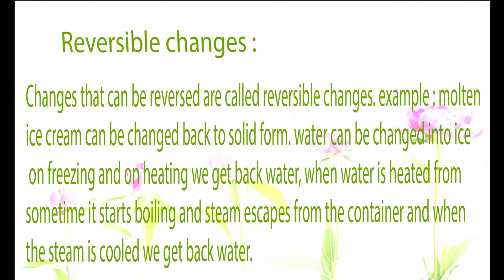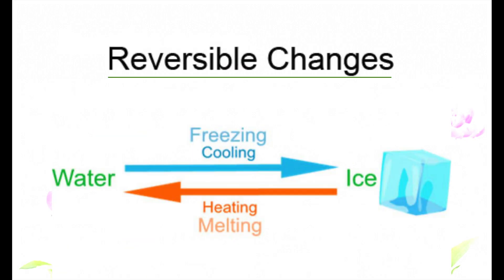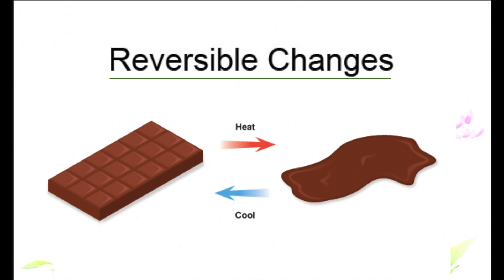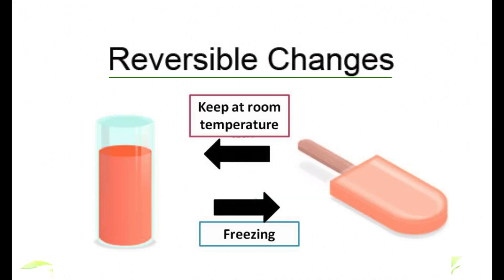Water on freezing or cooling becomes ice, and ice on heating or melting again becomes water. Similarly, a chocolate can be heated and it gets melted, and when it is cooled we again get the chocolate in solid form.